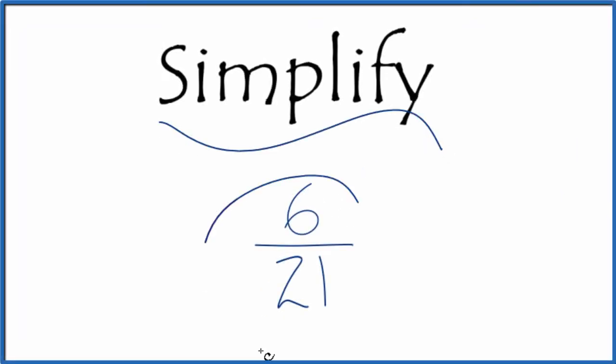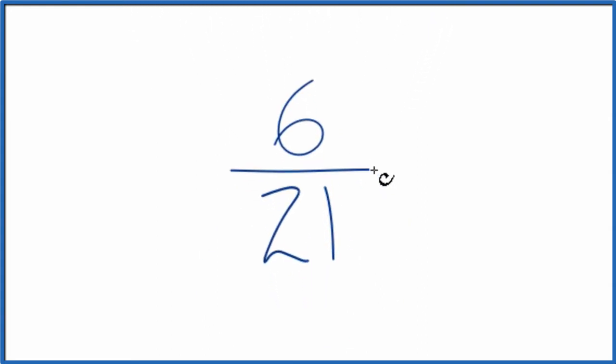Let's simplify the fraction 6 21sts. And here's how we're going to do it. We're trying to find another fraction that has the same value, an equivalent fraction. It's just that it's in the lowest terms.